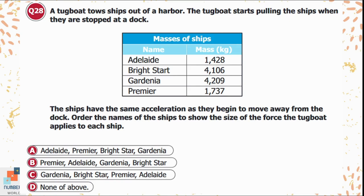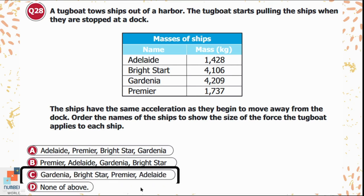Question 28: A tugboat tows ships out of harbor. The ships have the same acceleration as they begin to move. Order the ships by the size of the force the tugboat applies to each. The ship with the greatest mass requires the greatest force — Gardenia has the maximum mass, followed by Bright Star, then Premier, then Adelaide. The correct order from greatest to least force is: Gardenia, Bright Star, Premier, Adelaide — option C is correct.